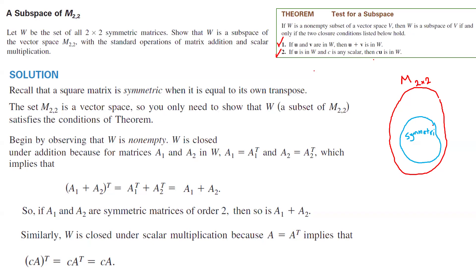On an exam, if asked to define a subspace of the space of all 2×2 matrices and prove it, you can use symmetric matrices and prove closure under matrix addition and scalar multiplication. Make sure to also double check other sets like skew-symmetric matrices, diagonal matrices, or other types — you should be able to check whether they are subspaces.